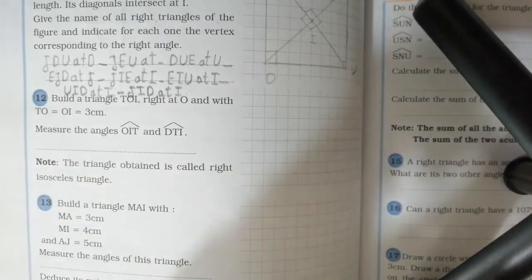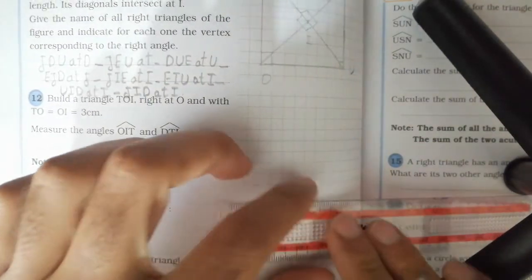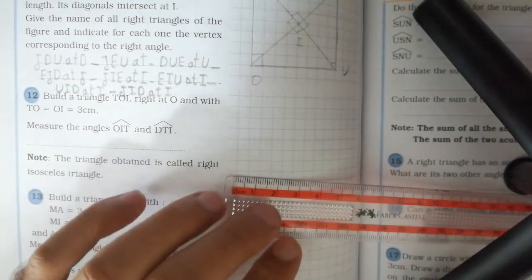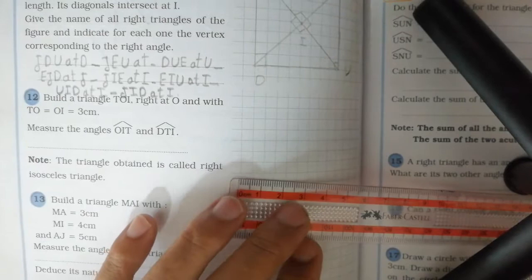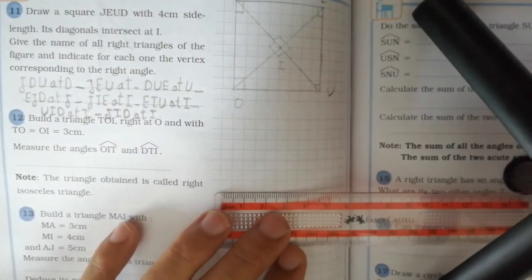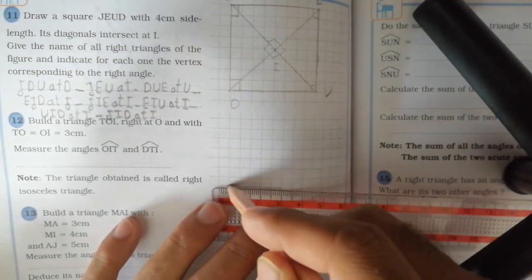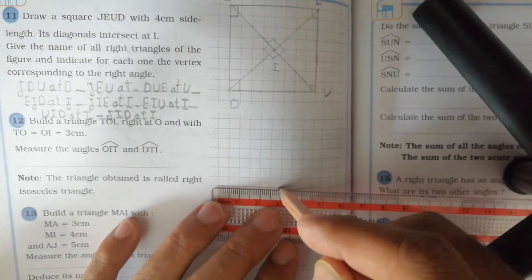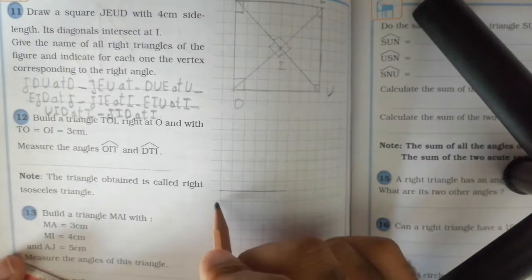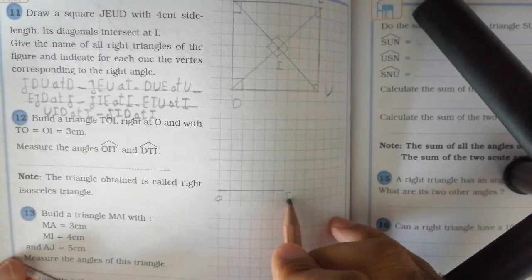So we start by drawing one of the two sides of the right angle, for example OI equal to 3 cm. This is the side OI of length 3 cm.